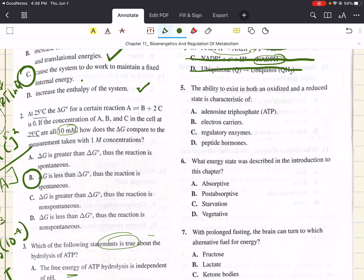Five says the ability to exist in both an oxidized and reduced state is characteristic of blank. This is a characteristic of electron carriers. Like we talked about earlier in the review, in order to transport electrons, electron carriers like the flavoprotein must be able to exist in a stabilized oxidized state and a stabilized reduced form. So five is B.